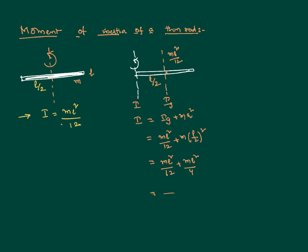So 12 is the LCM: mL square plus 3 mL square. That implies the moment of inertia is 4 mL square by 12, which is equal to mL square by 3.